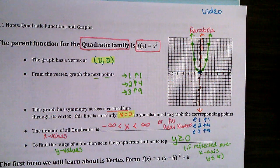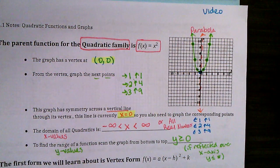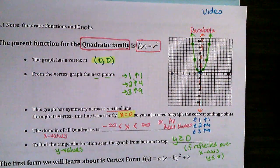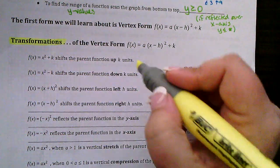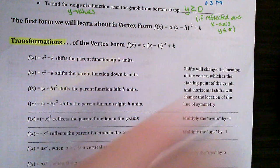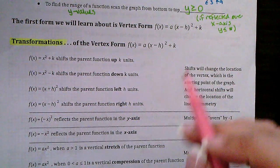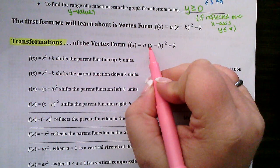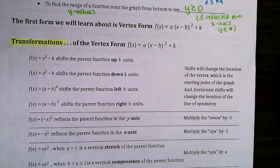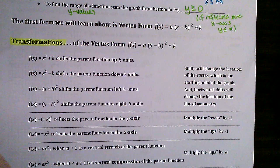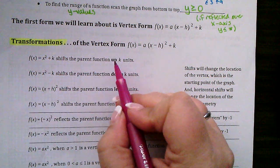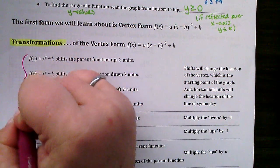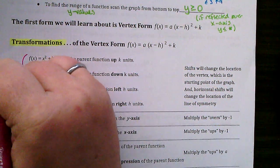Next: transformations. Just like we transformed in previous sections, we have transformations on quadratics. A transformation of a shift up, down, left, or right will move the vertex. So your vertex that was at (0, 0) — if you have a shift, it will change the location of the vertex. Remember, the vertex is the starting point of the graph. A horizontal shift will also change the location of the line of symmetry.